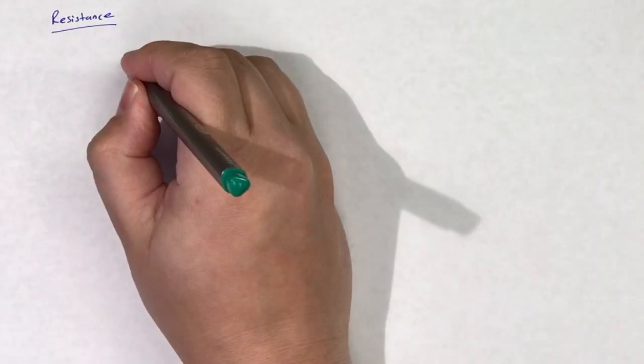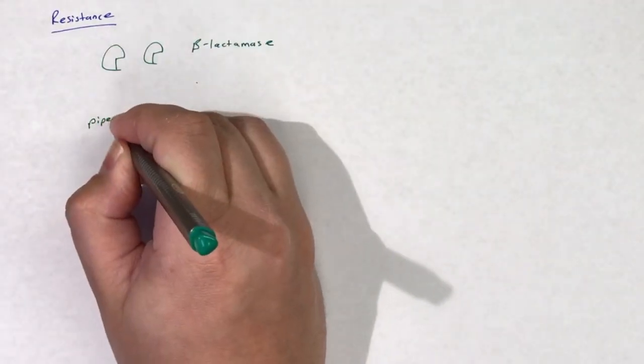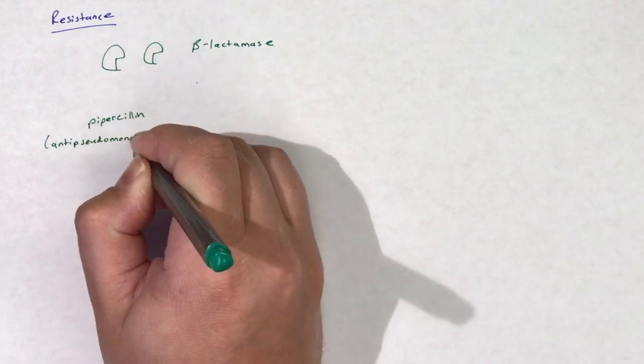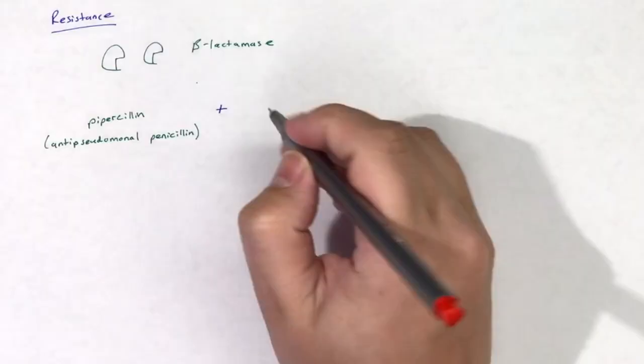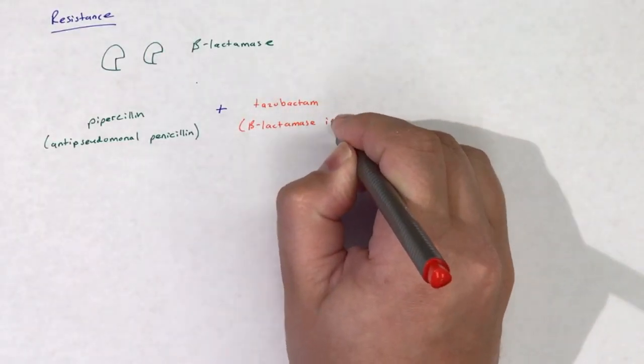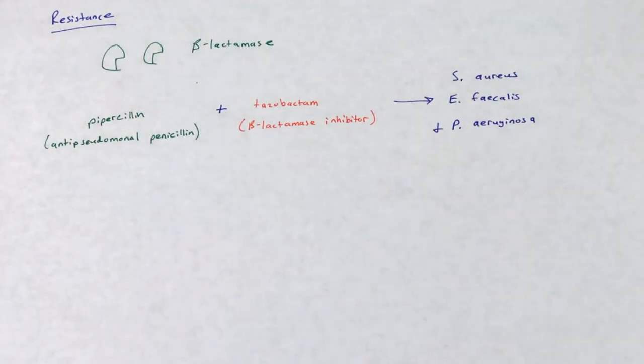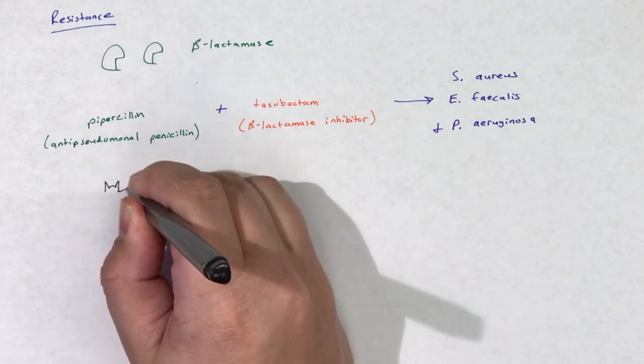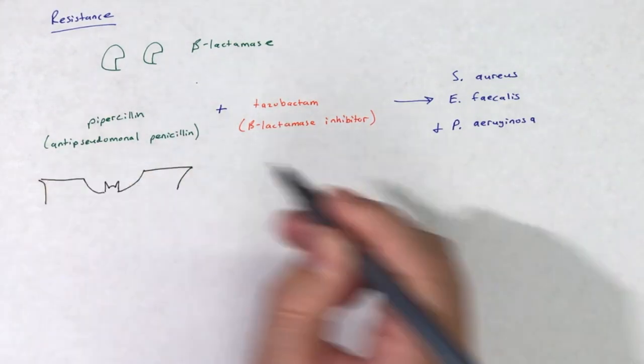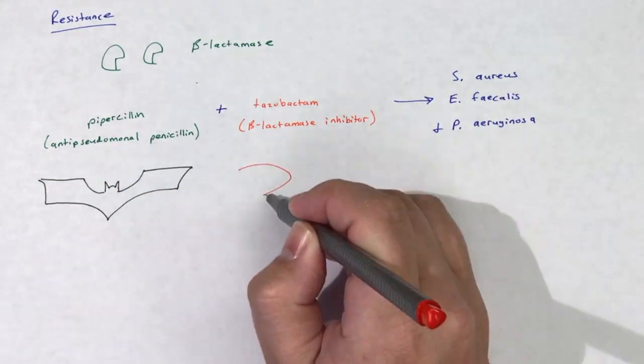Beta-lactamase production is a big mechanism of resistance for anti-pseudomonal penicillins. When piperacillin is combined with the beta-lactamase inhibitor tazobactam, it greatly enhances coverage, giving it useful activity against S. aureus and Enterococcus faecalis, in addition to its already superior activity against P. aeruginosa.